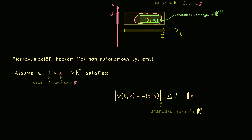On the left we get ‖w(t,x) − w(t,y)‖ measured in the standard norm of R^n, and this should be less than or equal to a constant L times ‖x − y‖. So we only have a parameter t involved as well — the simplification is that t can be chosen the same in both inputs. By taking the picture from before, we only have to compare inputs on the same vertical line, making it much easier to check the Lipschitz condition. But we still need it to hold for all vertical lines in the rectangle.